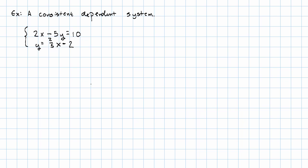If I were to graph this system, my first equation has x-intercept at 5, y-intercept at negative 2. My second equation has y-intercept at negative 2, and then I go over 5, up 2. These are the same lines. This system is consistent dependent.